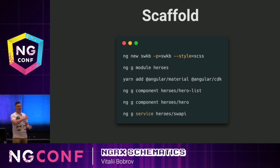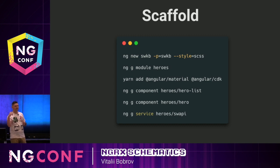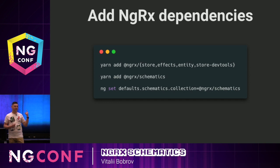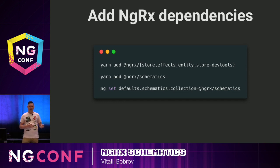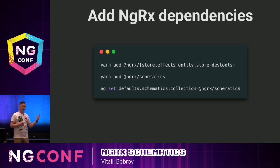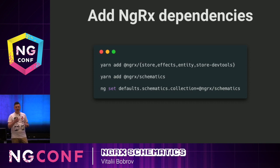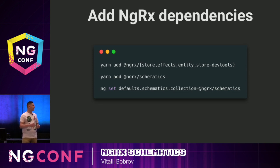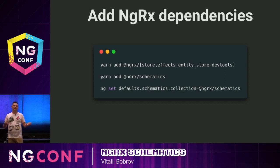And then I'm generating services to have some handy methods to fetch data from the Star Wars API. This was good, but we need to add NGRX to our application. To do so, we need to set up at least all required packages from the whole platform: NGRX schematics. So we're going to install store, effects, entities, store dev tools, and schematics itself.